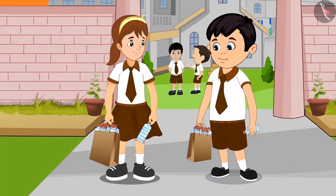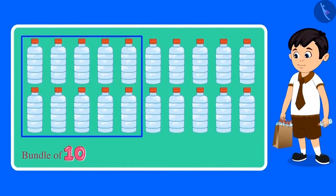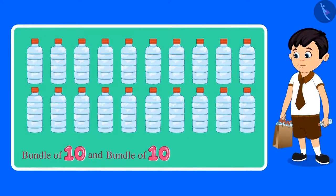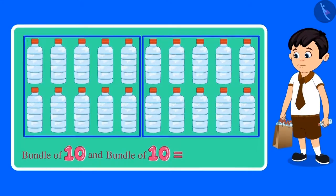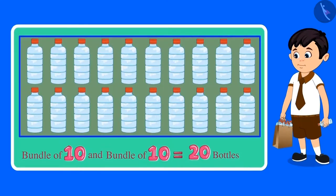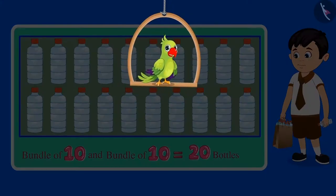Now let's count the number of bottles Chotu has collected. This is one bundle of 10 bottles, and this is another bundle of 10 bottles. These are two bundles of 10, so these are 20 bottles. This means Chotu has collected a total of 20 bottles.